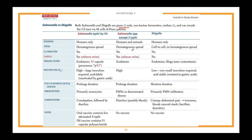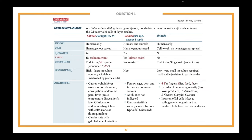In Shigella, patients present with crampy abdominal pain and bloody diarrhea. Transmission occurs through fingers, flies, food, and feces. Invasion of M cells — microfold cells — is key to pathogenicity.